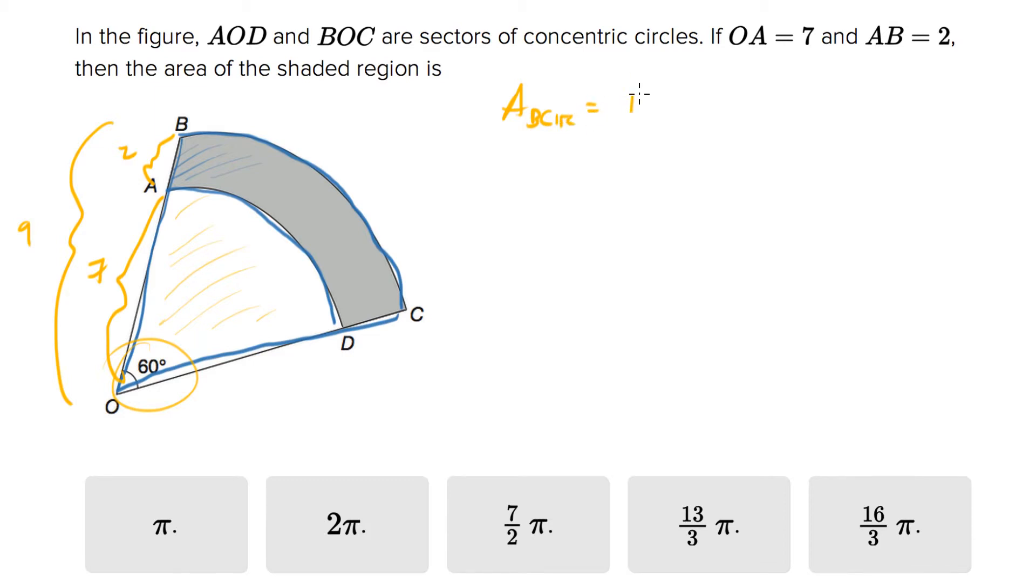If we want the area of the big circle, that would be πr² which equals π times 9² which is 81π. The area of the big sector equals the area of the big circle over 6, which is 81π/6.